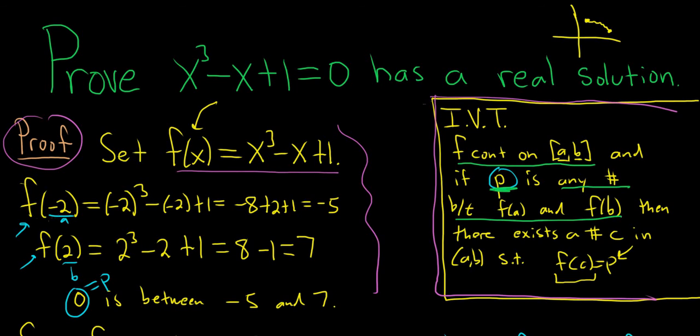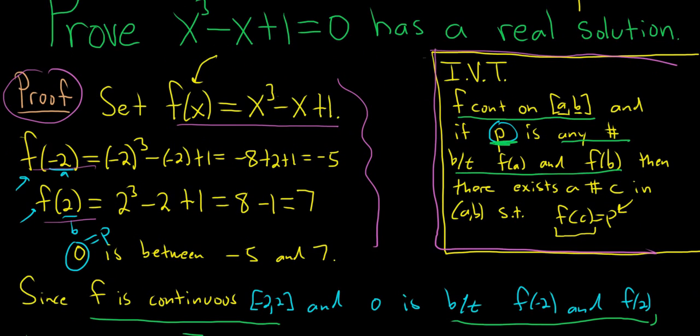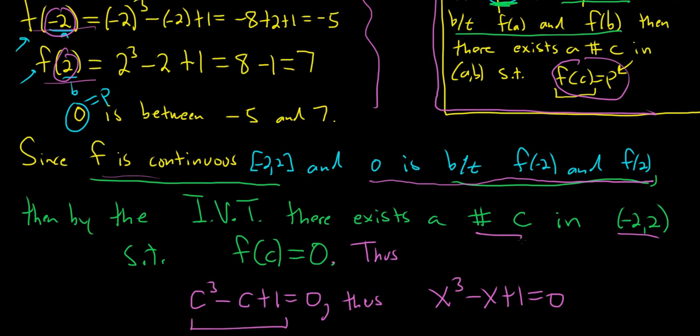We define the function. We plug in two values. I just made these up. I figured negative 2 will make it negative and 2 will make it positive. I was right. Zero is between those. That's what we want because we're trying to show it's equal to 0. You always want to make them change sign. And then you just say it's continuous and use these numbers. That's your a, that's your b. And don't forget to reiterate where 0 is between these numbers.